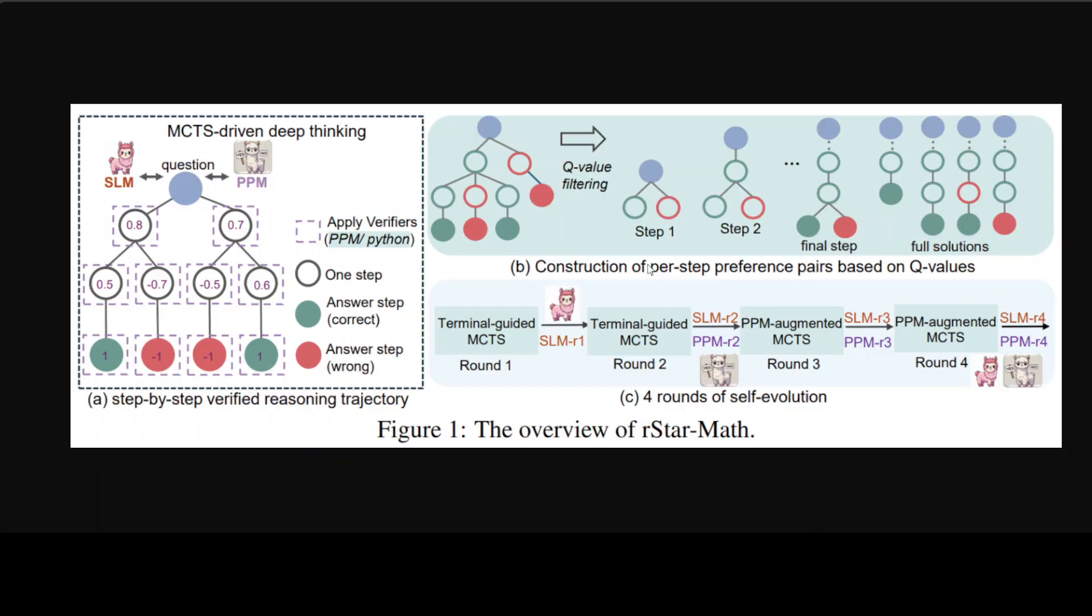Then comes the next component which is called the Process Reward Model. A Process Reward Model is the component of this model that helps evaluate the quality of each step in the solution process which I just described. The Process Reward Model is trained to predict a reward label for each step, indicating how good or bad the step is.